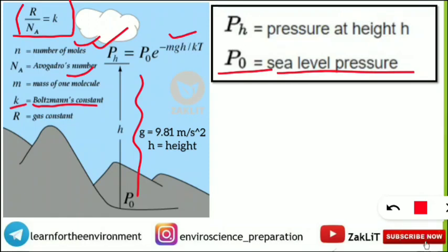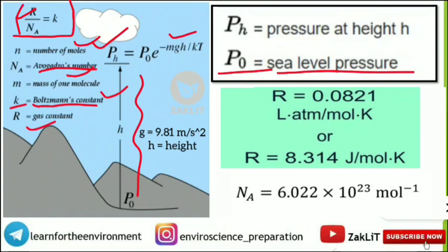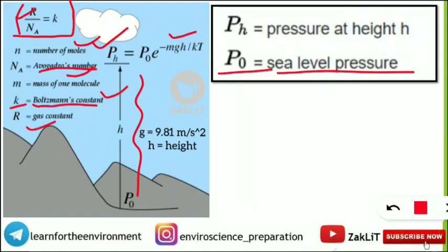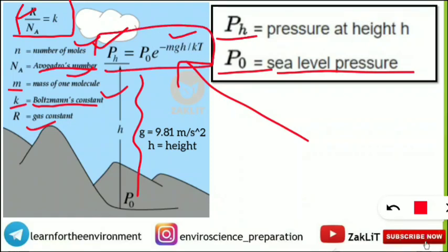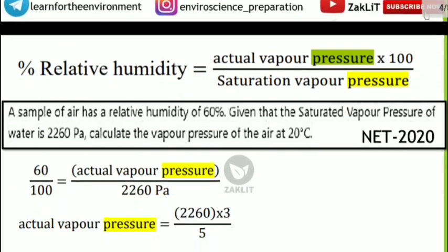The Boltzmann's constant k is equal to R (the gas constant) divided by Avogadro's number. So if you know the gas constant and Avogadro's number, you can derive the Boltzmann's constant to use in this formula. Also, small m in the formula is the mass of one molecule. Note this formula carefully — it is very important for the meteorological parameter pressure portion of the exam.